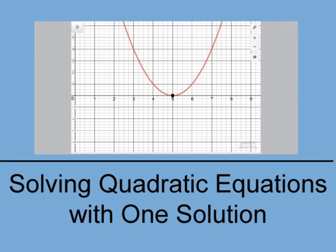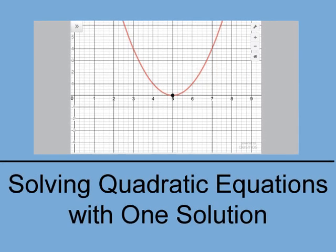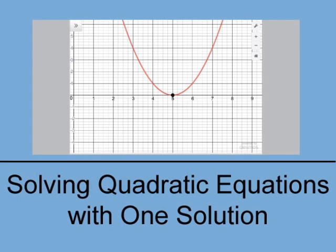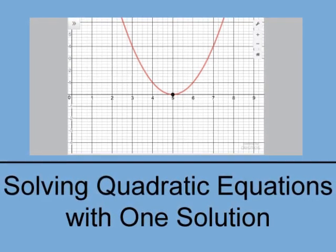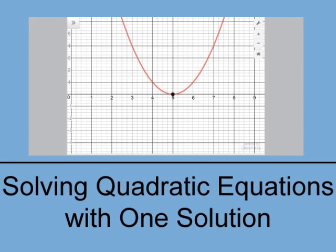In terms of real solutions to a quadratic equation, there can be 2, 1, or 0 such solutions. In this video, we look at examples of quadratics that have one solution.